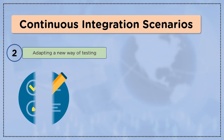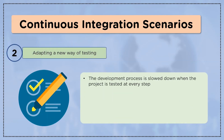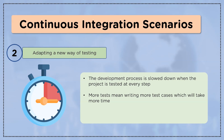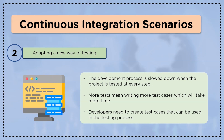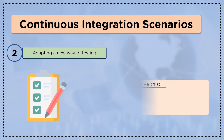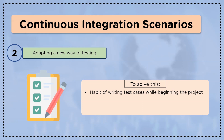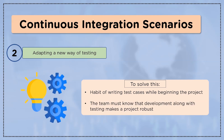The second scenario in the continuous integration section is adopting a new way of testing. The challenge is that the development process is slowed down when the project is tested at each and every step. More tests mean more time to write test cases, and developers need to create test cases that can be used in the testing process. There must be a habit of writing test cases from the beginning, and the team must understand that development along with testing makes a project robust.